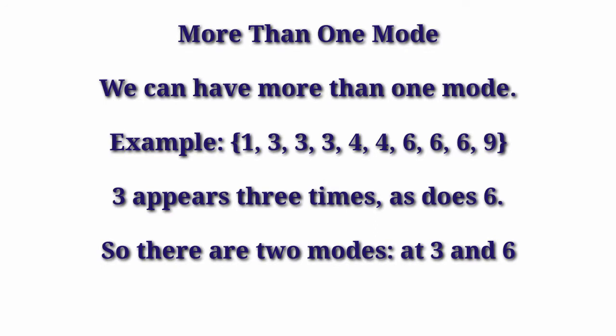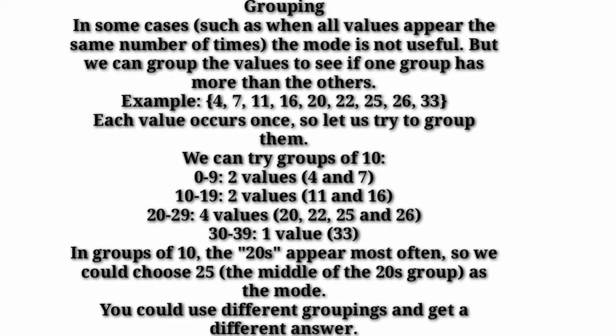We can have more than one mode. For example: 1, 3, 3, 3, 4, 4, 6, 6, 6, 9. Here, 3 appears 3 times and 6 also appears 3 times. So the modes are 3 and 6 — this is bimodal data. In some cases, such as when all values appear the same number of times, the mode is not useful and cannot be defined.